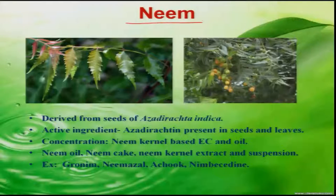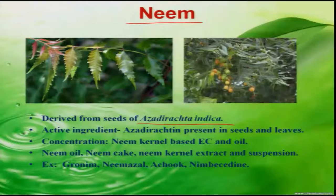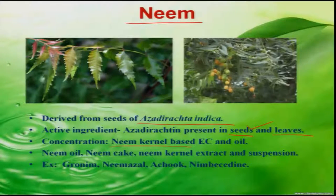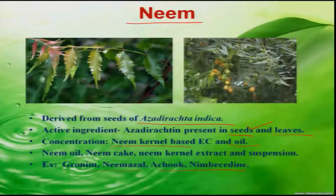Among them, one is neem, which is very much used in the management of insect pests on various crops. The active compound is azadirachtin, which is derived from neem, that is Azadirachta indica. It is present in both seeds and leaves, but much of the azadirachtin is contained in seeds. Both neem kernel and oil are used as insecticides. Some commercially available insecticides include Neemajal, Hachowk, and Neemecidine.